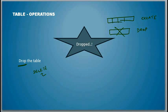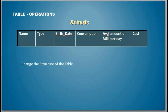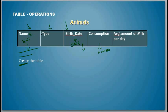And then the other type of operations that we can do is to change the structure of the table. If you notice, in the previous slide, I have five columns: one, two, three, four, five. I have a name column, type column, birth date, consumption, and average amount of milk.